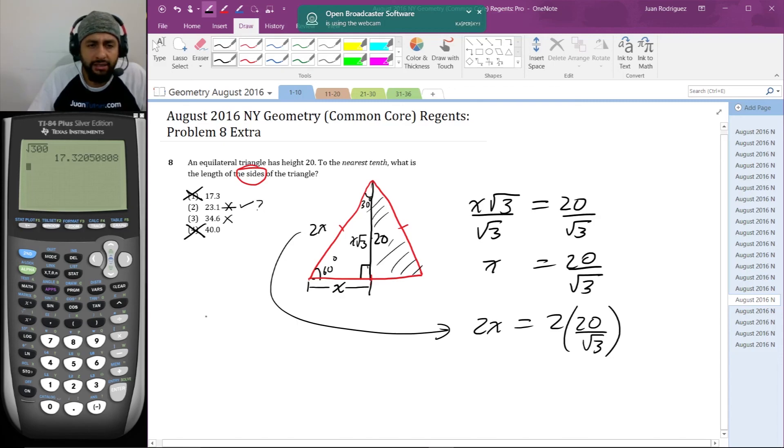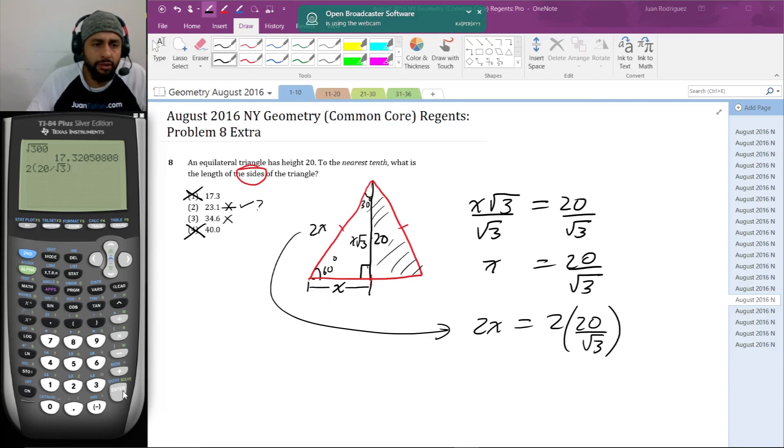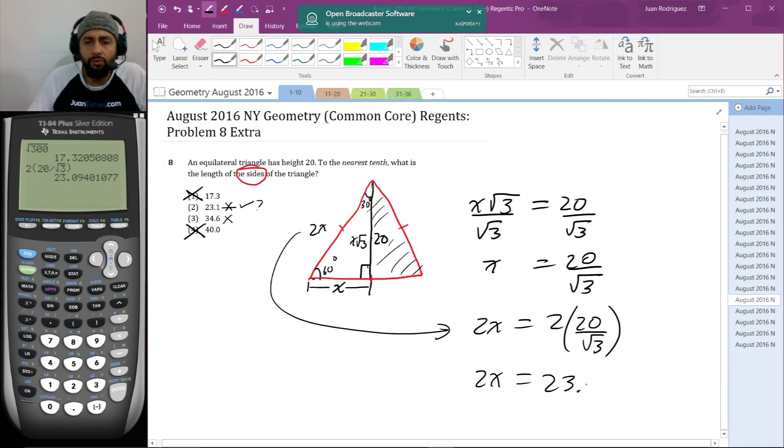Let's see what the calculator says: 2 × 20 / √3. That gives 23.09401076, so 23.1. 2x = 23.1.